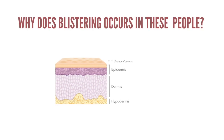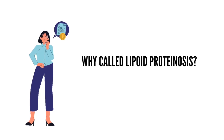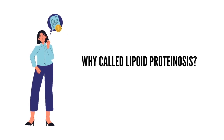Why does blistering occur in these patients? The ECM1 gene also has an essential role in the structure of the skin. It acts by interacting with a number of proteins such as laminins, and hence has a role in the integrity of the basement membrane. This could explain the blistering seen in the first stage of lipoid proteinosis.